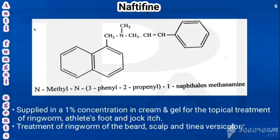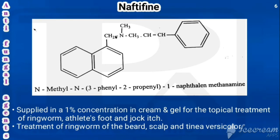The next drug is naftifine, an allylamine derivative. The structure contains allyl (up to that portion) and amine, hence it is an allylamine derivative. From the name, it has a naphthalene — the fusion of two benzene rings. The first portion of naphthalene has CH2-NH, giving a methanol amine group. By replacing groups with hydrogens, we get CH2-NH2, called methanol amine. The parent is naphthalene, giving the name 1-naphthalenemethanamine.